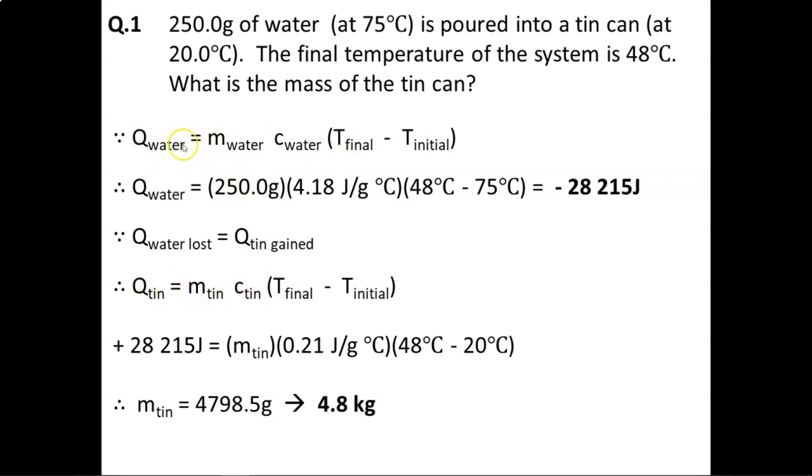It is very important that you keep these values consistent. If you are looking for the amount of energy lost or gained by the water, you must use the mass of the water and the heat capacity of the water in order to calculate that. You can't mix and match using q water, m tin, then c water. Everything must be for water here, and everything in this equation must be for tin.